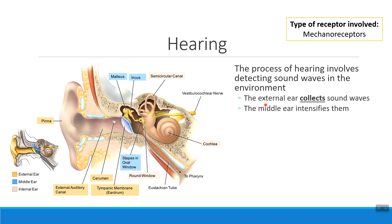Once those sound waves get into the portion of the ear called the middle ear, the job is to intensify, or make those sounds louder. In the middle ear, we have three small bones called the ossicles. The first ossicle, the first bone, is the malleus. It's right next to the incus in the middle, and the small stapes at the very end. These three bones vibrate with the sound waves that were collected in the external ear.